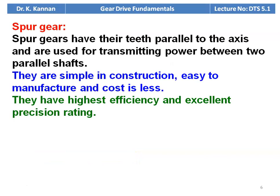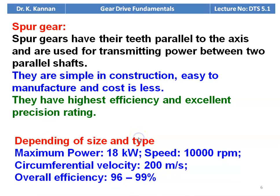The first type is spur gear. Spur gears have their teeth parallel to the axis and are used for transmitting power between two parallel shafts. They are simple in construction, easy to manufacture, and the cost is also less. They have the highest efficiency and excellent precision rating. The maximum power that can be transmitted is 18 kilowatts at a speed of 10,000 RPM maximum, with circumferential velocity of 200 meters per second and overall efficiency of 96 to 99 percent.